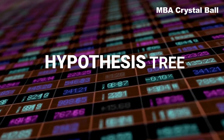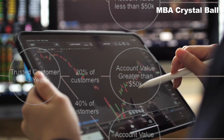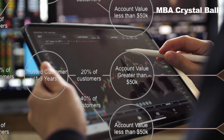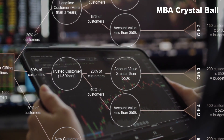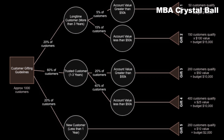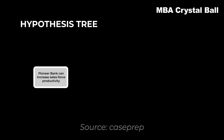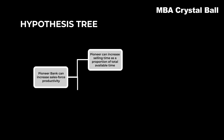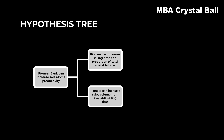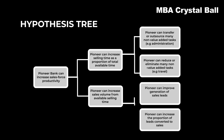Another method is to develop a hypothesis tree, which is the graphical representation of all MECE hypotheses that explain the problem. A hypothesis essentially refers to a theory based on some assumptions. The hypothesis tree is similar to an issue tree, but provides a more direct approach. For example, Pioneer Bank wants to increase the productivity of its sales. The two main hypotheses are: Hypothesis 1 — Pioneer can increase selling time from the total available time; and Hypothesis 2 — Pioneer can increase sales volume using the available selling time. Sub-hypotheses include reducing non-value-added tasks and increasing sales leads and conversions.